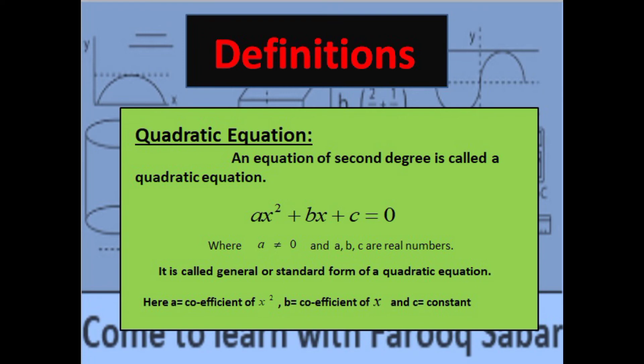Here a is the coefficient of x², b is the coefficient of x, and c is a constant. Hope you people learn this definition very well.